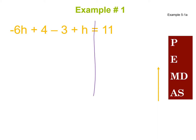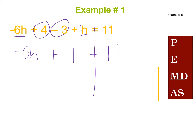Looking at the left-hand side of the equation, I notice I have a negative 6h and a positive h that are like terms. Remember that h means 1h. So negative 6 plus 1 gives me negative 5h. And I also have positive 4 and negative 3 as like terms — 4 minus 3 is 1, so I write plus 1. Then equals 11 stays on the right-hand side.